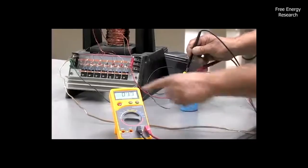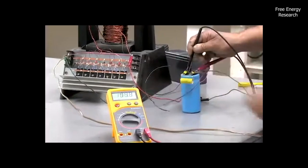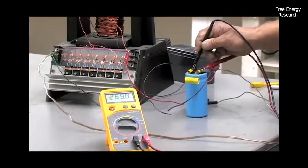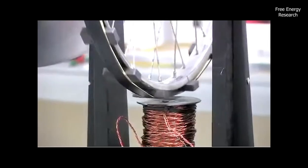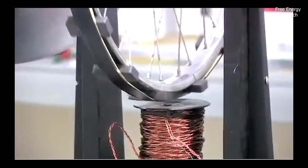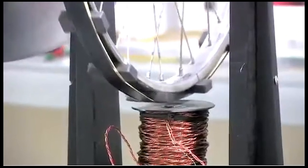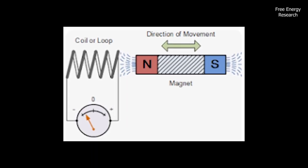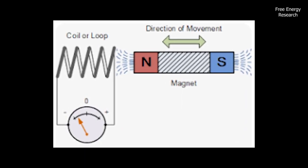The Bedini battery charger operates on the principle of electromagnetic induction and utilizes pulsing electrical currents to charge and discharge the battery. It consists of a rotor and stator arrangement, where the rotor is a spinning magnet and the stator contains one or more coils of wire. The spinning magnet induces a current in the wire coils, which is then directed to the battery being charged.